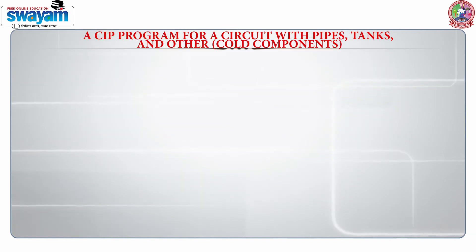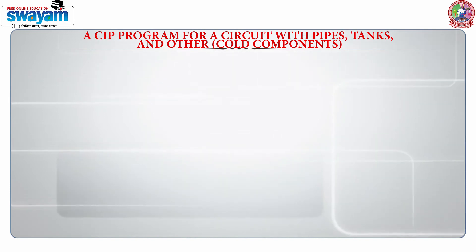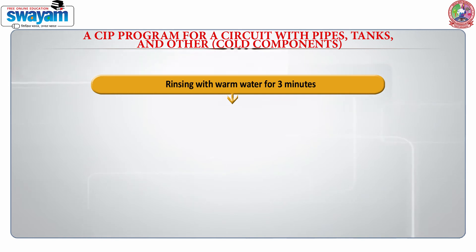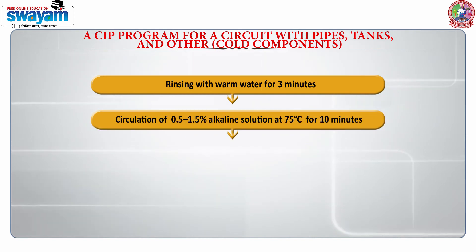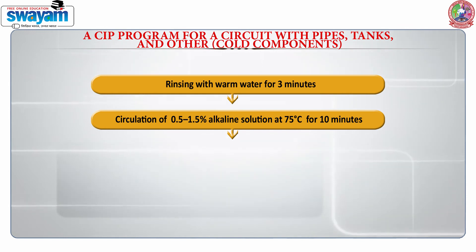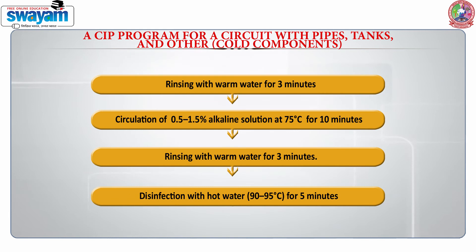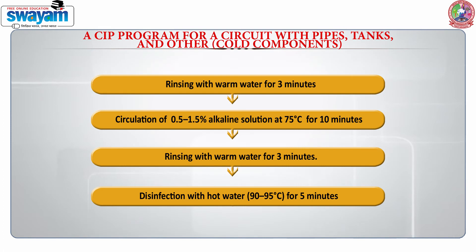The CIP program for pipes and tanks — the cold components — is much simpler. It involves rinsing with warm water for 3 minutes, circulation with 0.5 to 1.5 percent alkaline solution at 75°C for 10 minutes, then rinsing with warm water for 3 minutes. Finally, the last step is disinfection with hot water at a temperature of 90 to 95°C for 5 minutes.